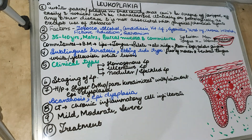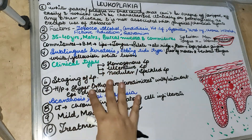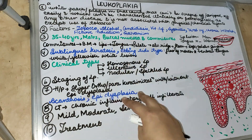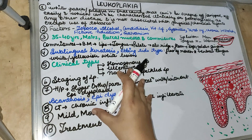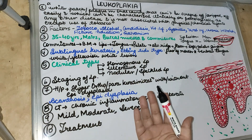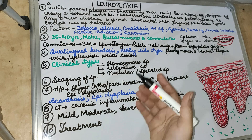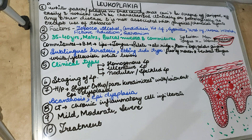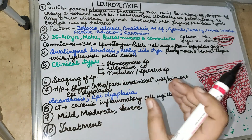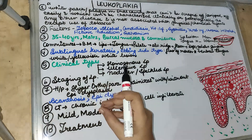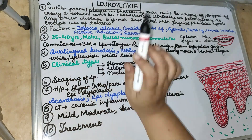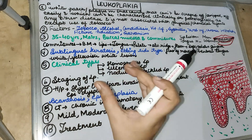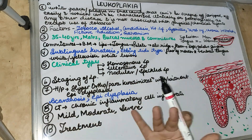Sublingual keratosis is leukoplakia occurring at the floor of the mouth or the ventral surface of the tongue. There is also the ebbing tide type of leukoplakia, occurring at the floor of the mouth, resembling undulations left on sand by an ebbing tide — it occurs due to loose binding and consequent movement of the mucosa. The lesion can be small, well-localized, irregular, or diffuse.